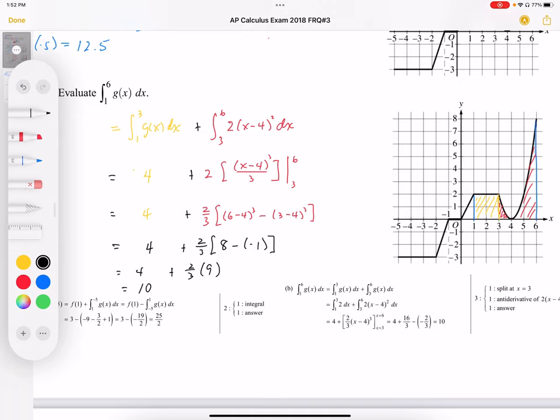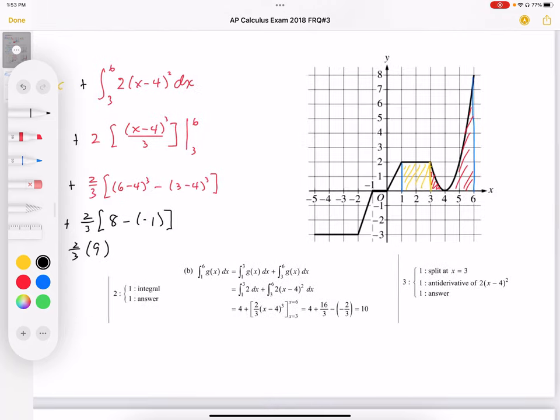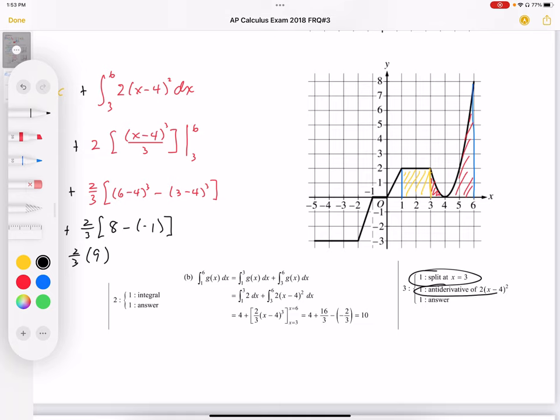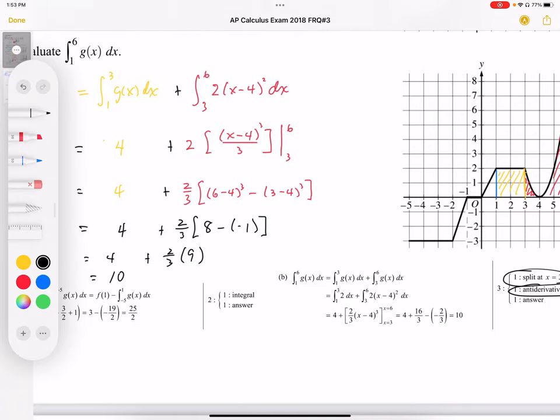So we end up with this, the value of the area, or the area underneath the curve from 1 to 6 is going to be 10 units. There's three marks from this. One mark is splitting at x equals 3. The other mark is the antiderivative of 2(x minus 4) squared. And the third mark is for the final answer of 10 units.